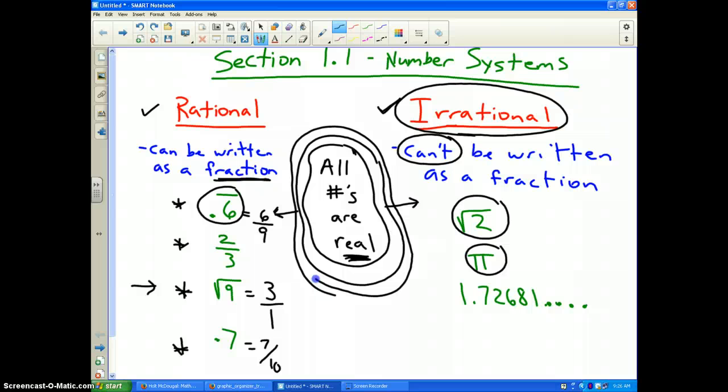Pi is irrational because it is a number that goes on forever without repeating. And finally, 1.72681 dot dot dot dot.